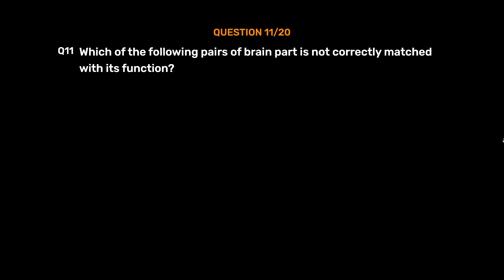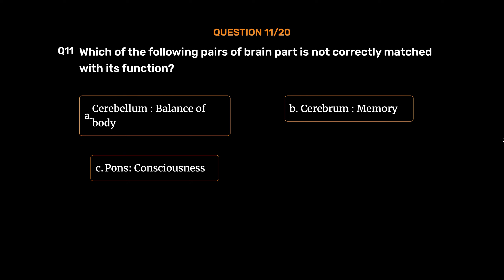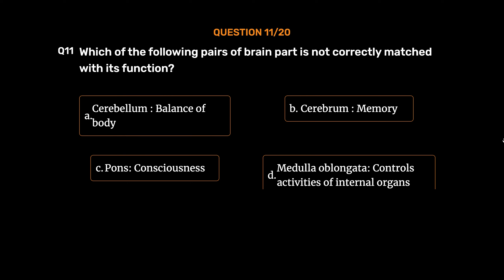Question number 11. Which of the following pairs of brain part is not correctly matched with its function? Option A: Cerebellum — Balance of body. Option B: Cerebrum — Memory. Option C: Pons — Consciousness. Option D: Medulla oblongata — Controls activities of internal organs. The correct answer is Option C: Pons — Consciousness.